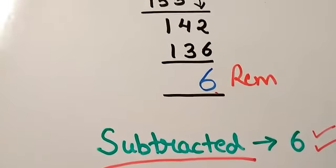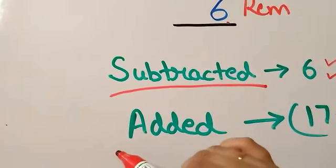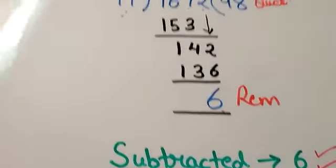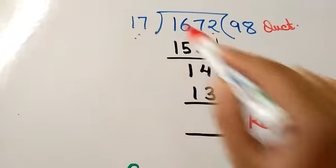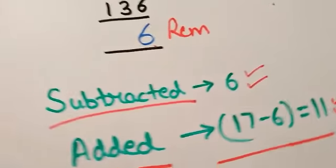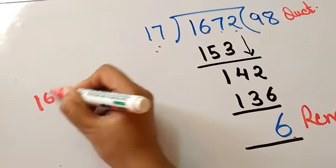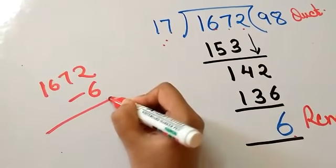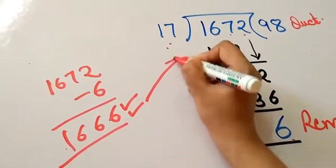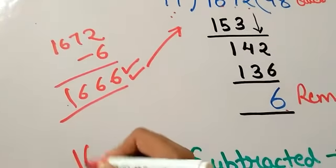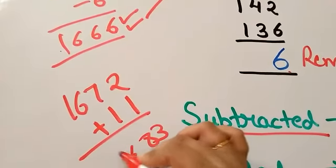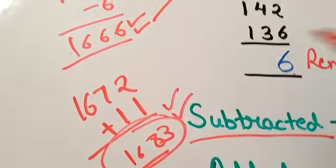So the answer is 6. In the second question, you were asked what least number must be added to 1672 to be completely divisible by 17. According to the trick, it must be x minus r, that is 17 minus 6, which equals 11. You can even check: 1672 minus 6 is completely divisible by 17, and adding 11 to 1672 is also completely divisible by 17.